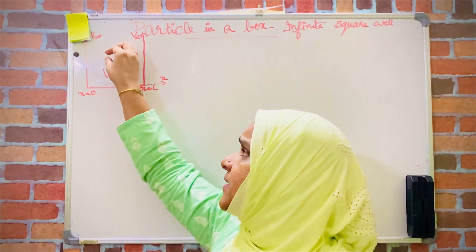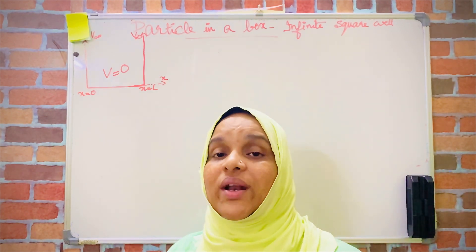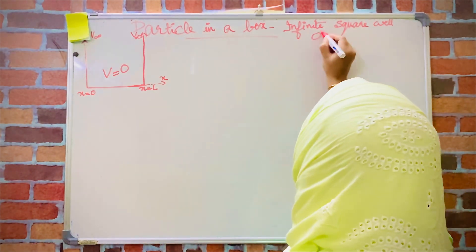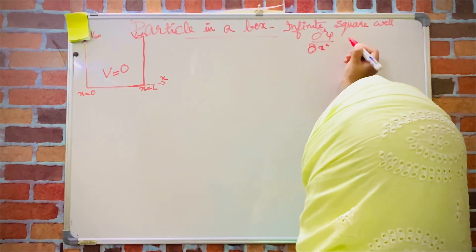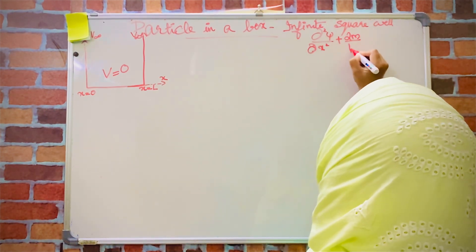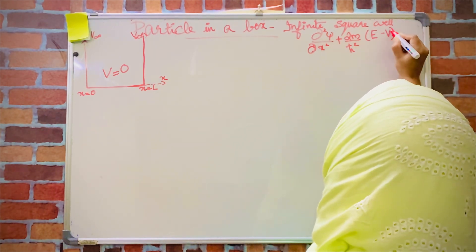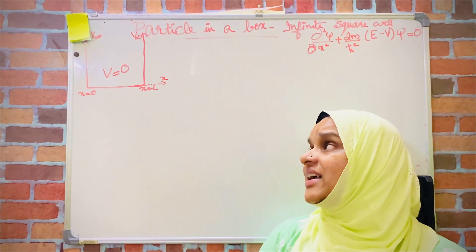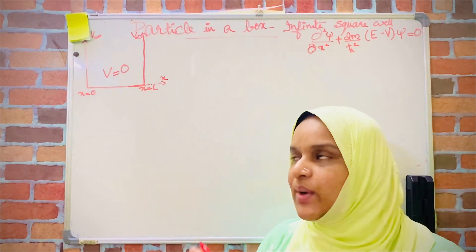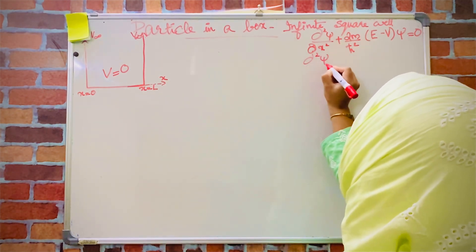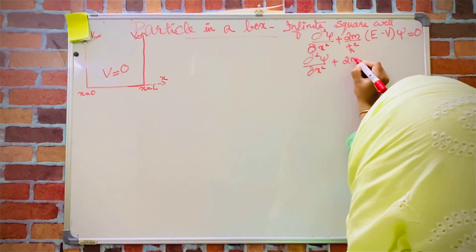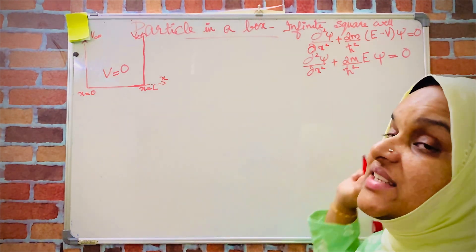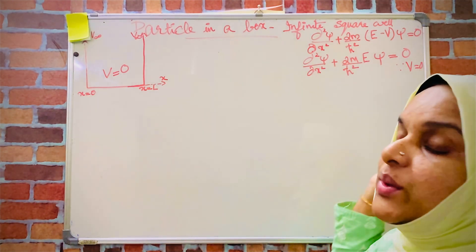Since the particle inside this box has zero potential, we can write the Schrödinger equation as: ∂²ψ/∂x² + (2m/ħ²)(E − V)ψ = 0, where E is the total energy and V is the potential energy. But since inside the well the potential V is equal to zero, the equation becomes ∂²ψ/∂x² + (2m/ħ²)Eψ = 0.